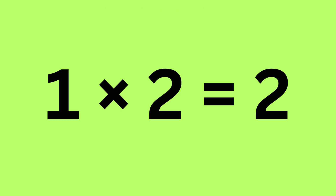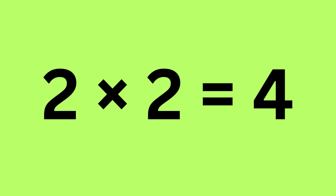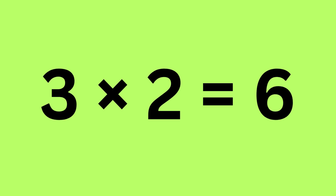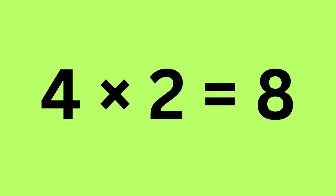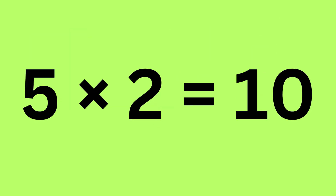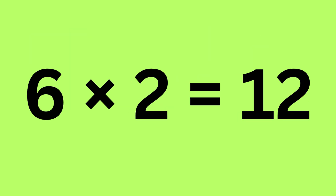1 times 2 is 2, 2 times 2 is 4, 3 times 2 is 6 — are you ready for more? 4 times 2 is 8, 5 times 2 is 10.